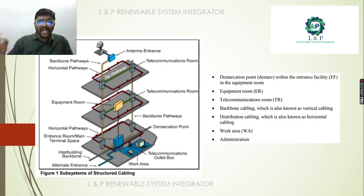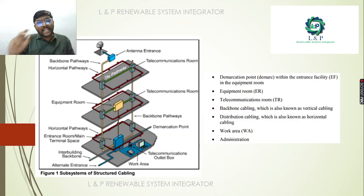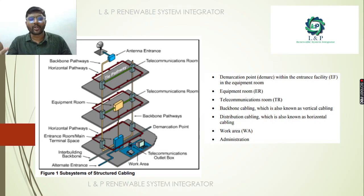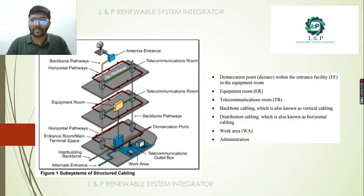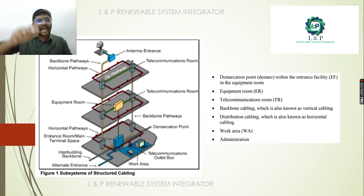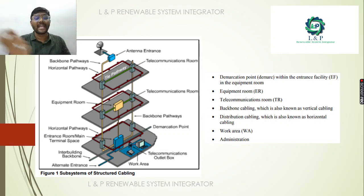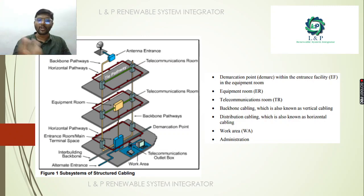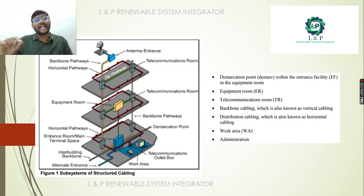If you look at this, there is an equipment room. There is a telecommunication room with many other floors — three-floor buildings, two-floor buildings, multi-storey buildings. There are telecommunication rooms on each. The backbone cabling is very important. Where is the horizontal cabling? There is a distribution cable. On one floor, there are horizontal cabling pathways.